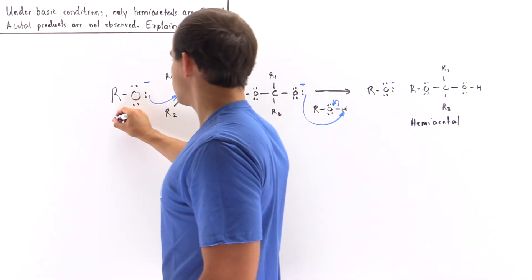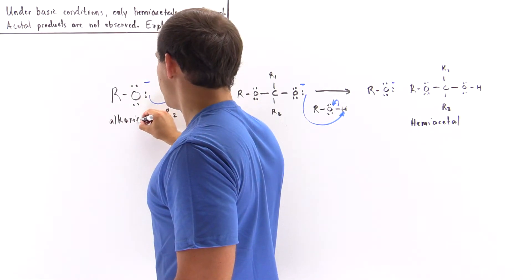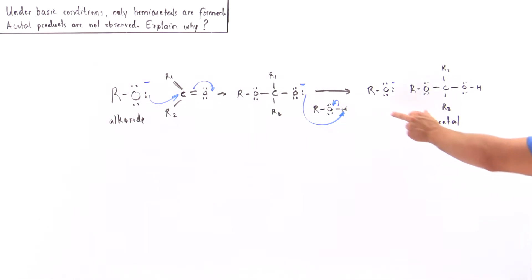This is our alkoxide base because we are under basic conditions, and notice that we begin with alkoxide base and we are left with this alkoxide base.